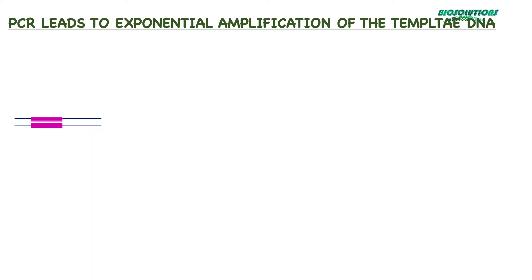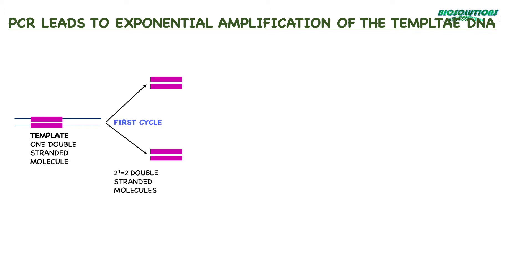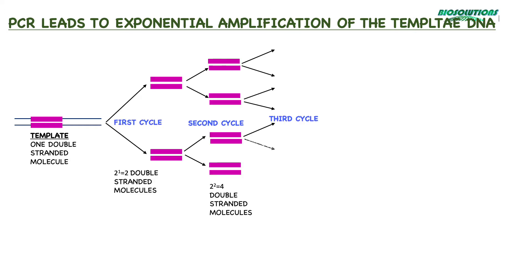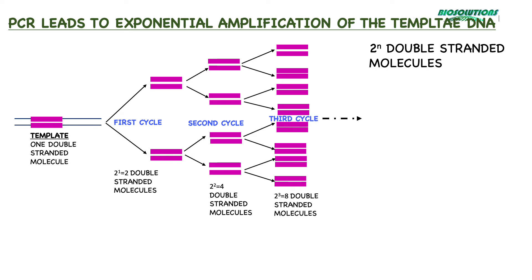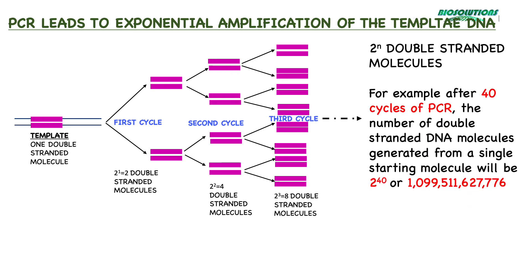PCR amplifies a strand of DNA exponentially. The number of new strands doubles during each cycle and can be calculated by 2 raised to the power n, where n is the number of cycles. Here we are assuming that the starting DNA template was only one molecule and that the PCR reaction works with 100% efficiency.